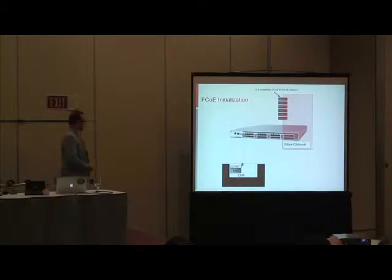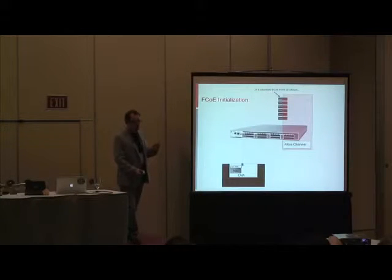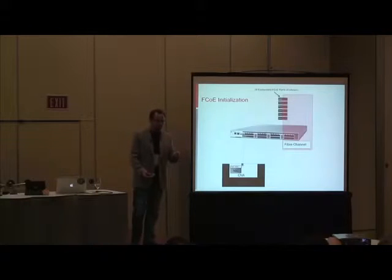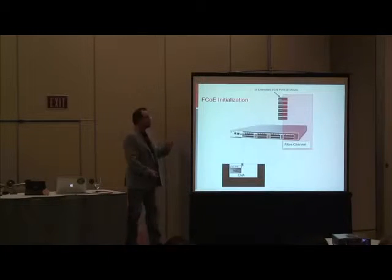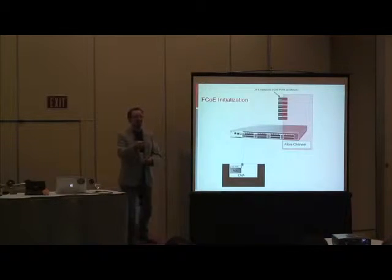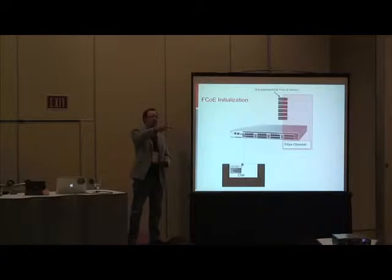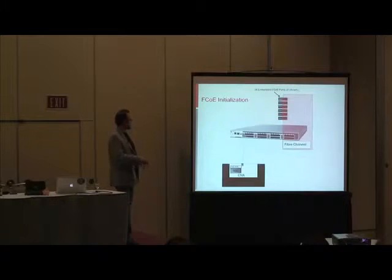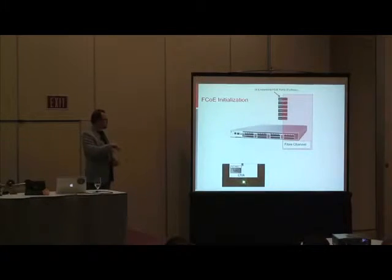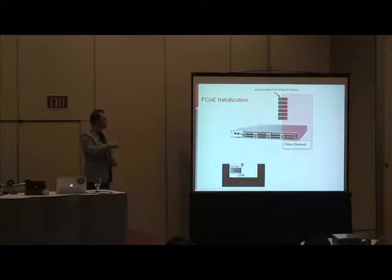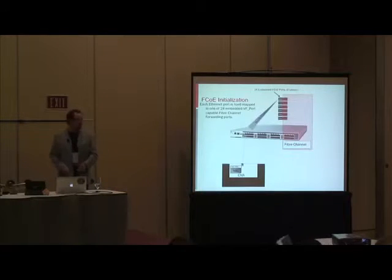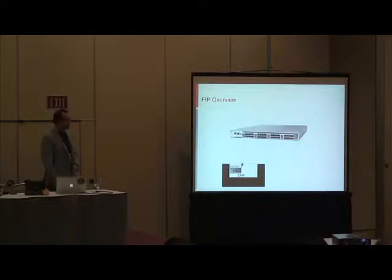Essentially what you have is a device where, since fiber channel is FCP over fiber channel and FCoE is basically FCP over DCB, the encap and decap is really not that big of a deal. You're even tricking the server, because the server sees an HBA. When you load the driver, you get HBAs and you get NICs. So you're telling it that it has an HBA, but it's actually going out via FCoE.